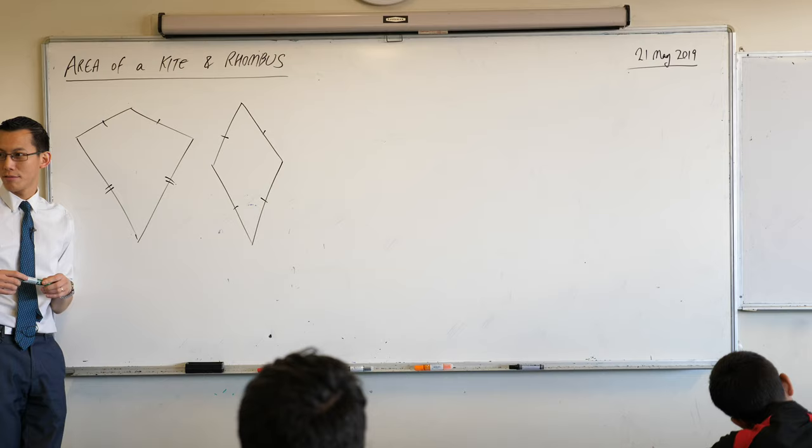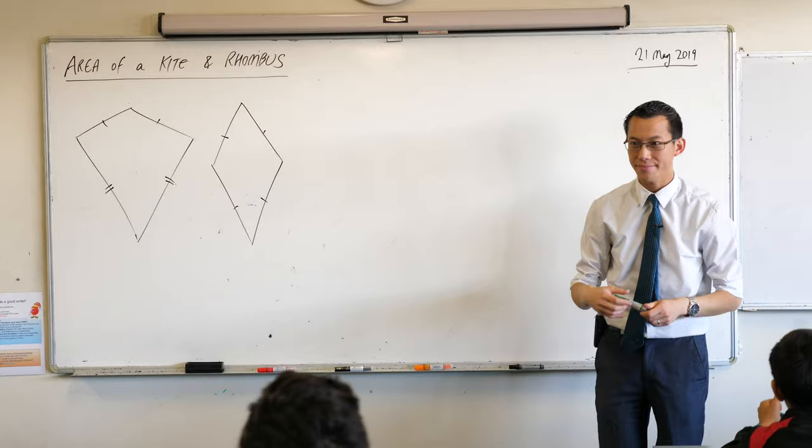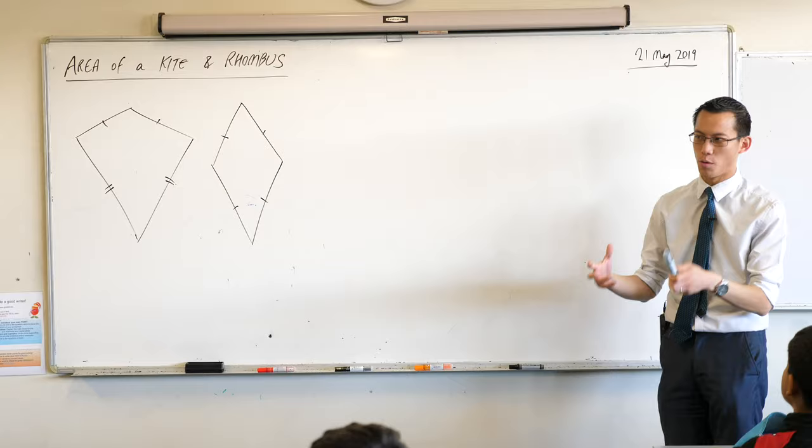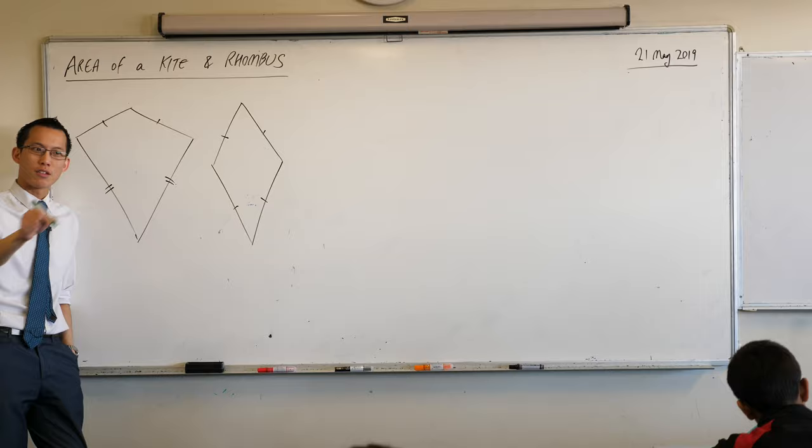They're kind of the same. I'm going to agree with you there. Do you remember yesterday we looked at this idea that every area formula is interconnected? Come in, grab a seat, boys. Every area formula is related to every other one. Some of the connections are more obvious than others. The kite and the rhombus we're going to deal with together because they each share a property which results in the same formula. And you'll see why in a second.